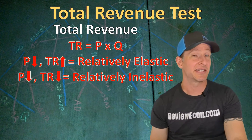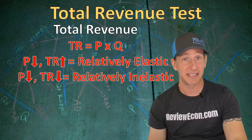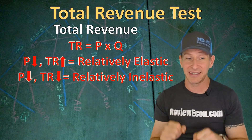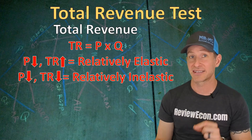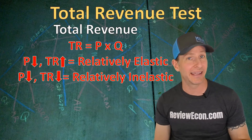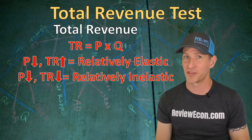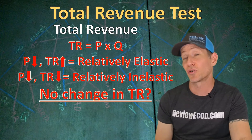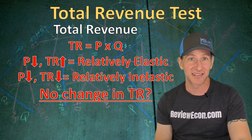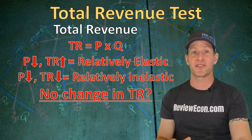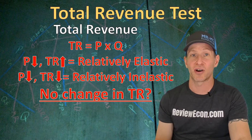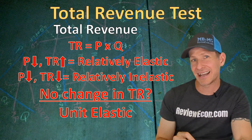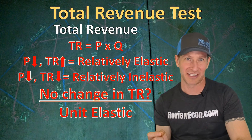If price decreases and we see a total revenue decrease as well, they're going in the same direction again, meaning the demand curve is relatively inelastic through that price range. Now, if there's an increase or decrease in price and total revenue doesn't change, we have a special term for that: unit elastic. It's essentially halfway between relatively elastic and relatively inelastic.